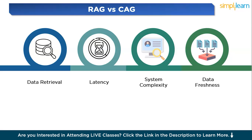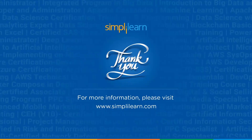These differences make RAG ideal for scenarios where data is constantly changing or too large to load into memory, while CAG is more efficient for use cases with stable and well-defined knowledge. That was all for today's video — I hope you enjoyed learning about RAG versus CAG.